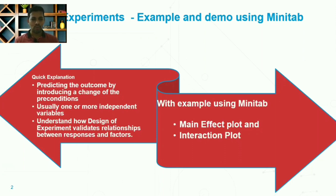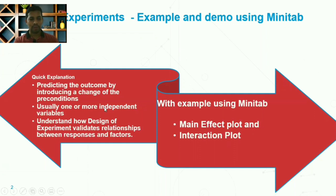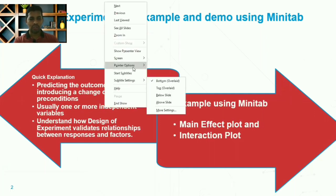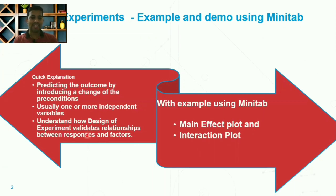What DOE does is allow us to predict the outcome by introducing changes to the preconditions. You can set the preconditions, feed them into Minitab, and try to see which gives the best viable or optimized solutions. You can take one or more independent variables, predict outcomes, and also validate the relationship between responses and factors — multiple responses and many factors. That's the best part of DOE. In this video we'll do it in Minitab using the main effect plot and interaction plot.